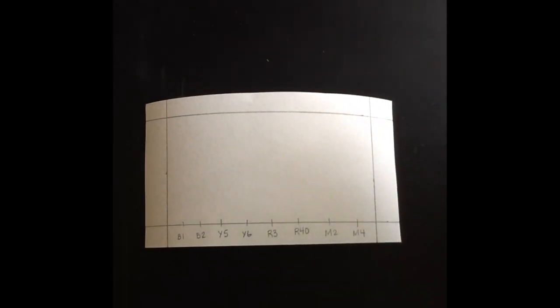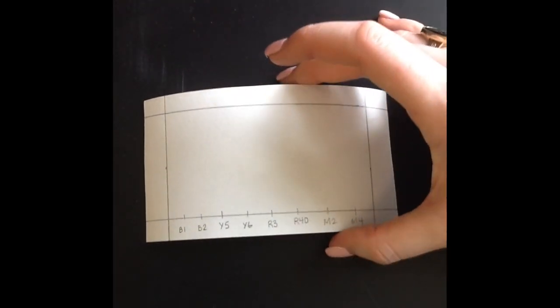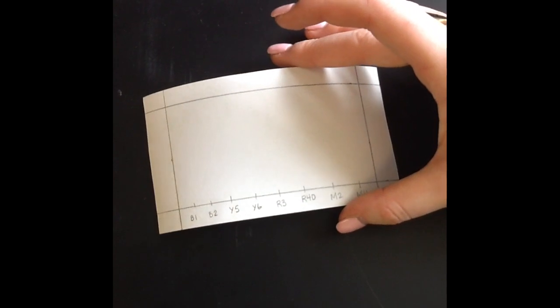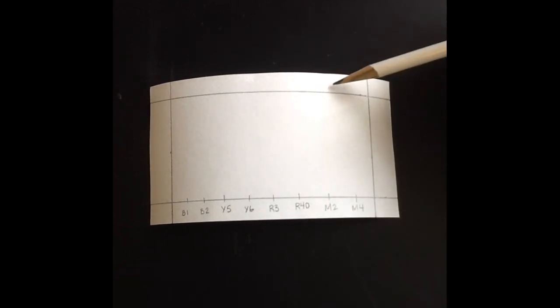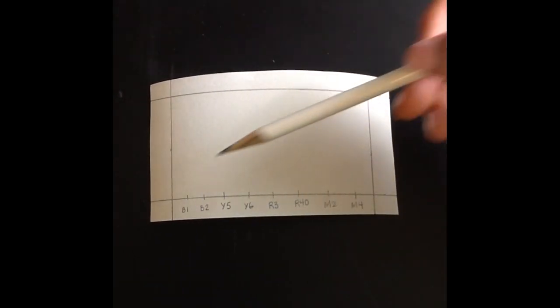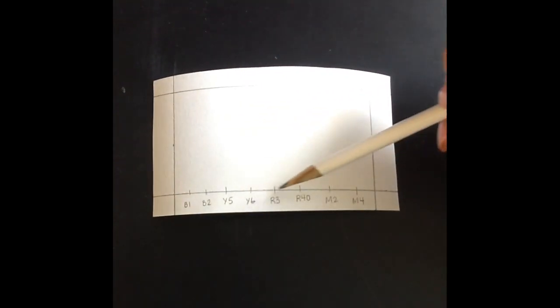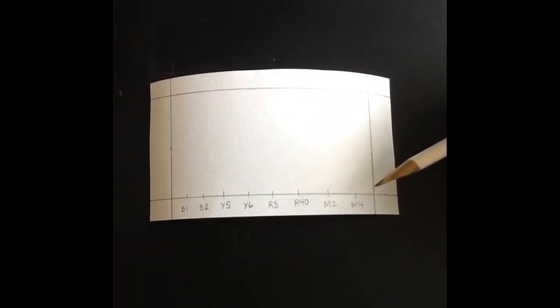To begin, lay your chromatography paper so that it is curved downward. Using a pencil, draw a line 1 cm from the bottom. This will be called the origin. Draw a line 1.5 cm from the top and sides. The top line will be called the top margin. Label the origin line with the dyes provided.